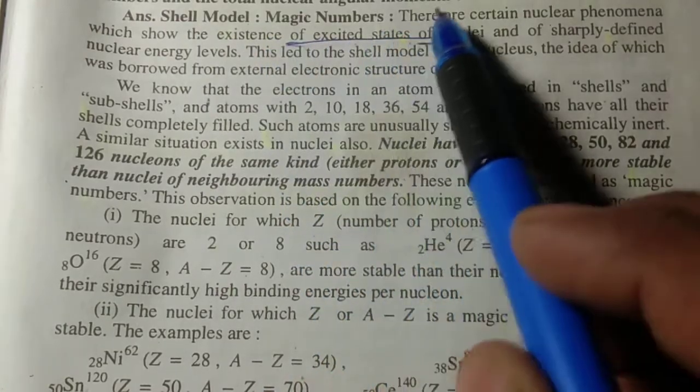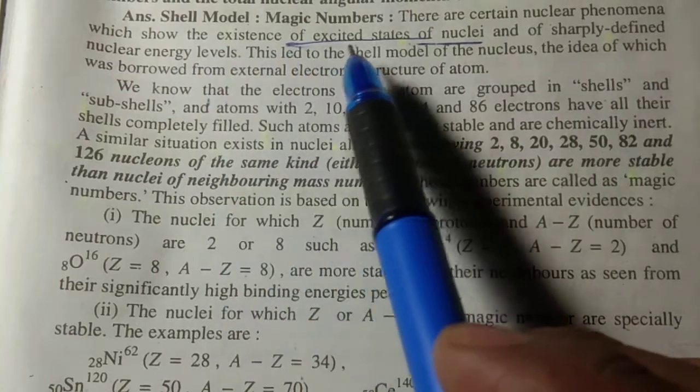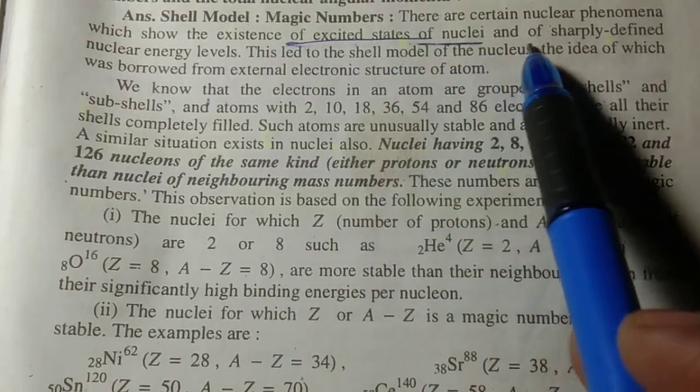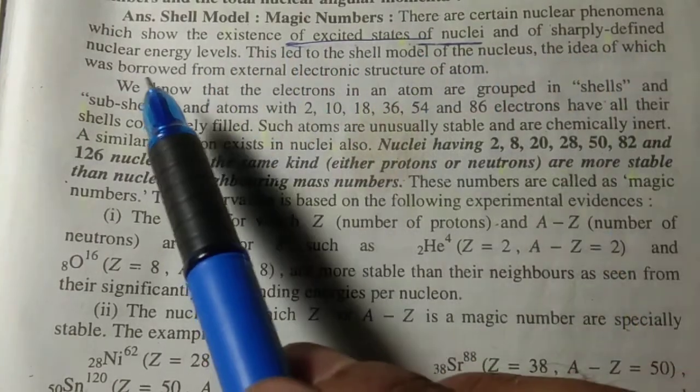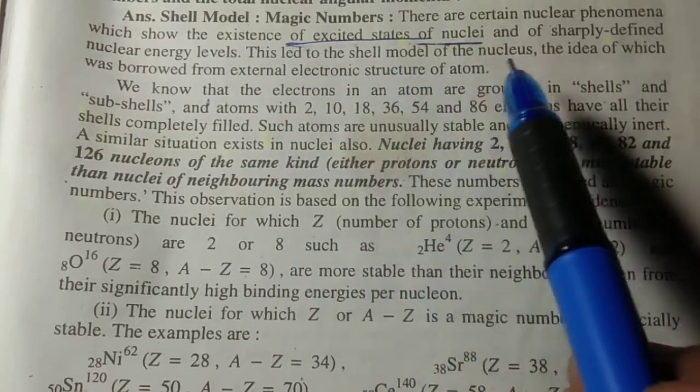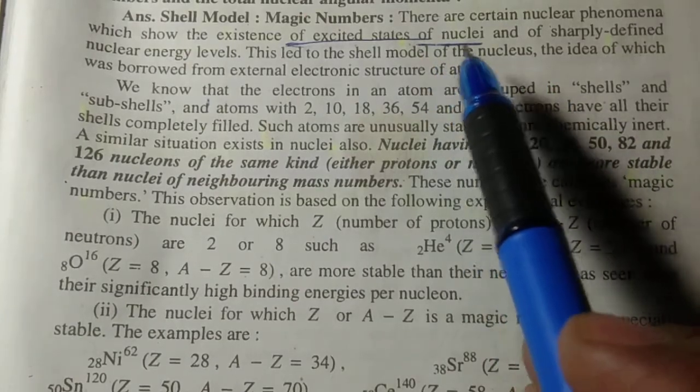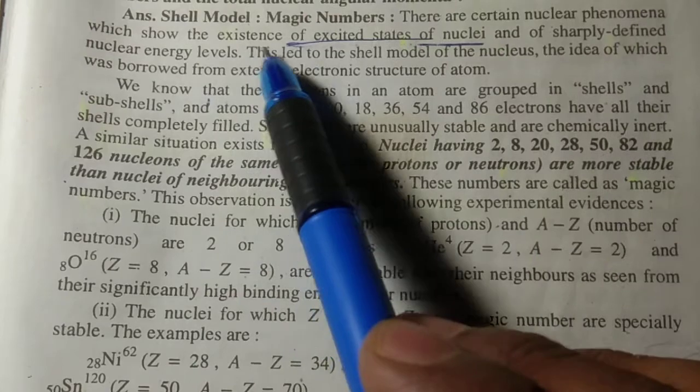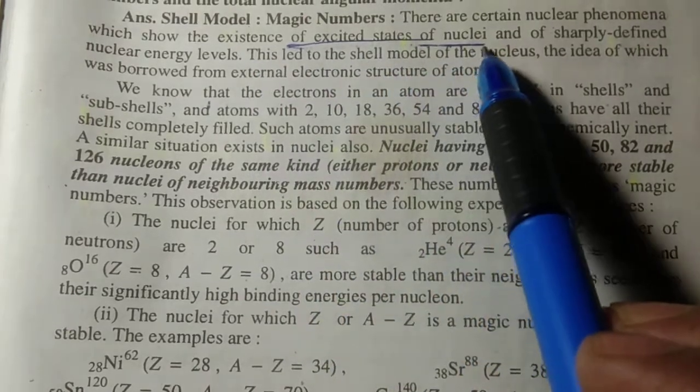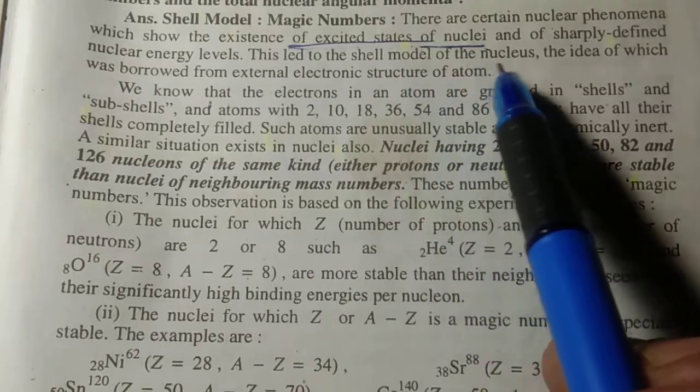There are certain nuclear phenomena which show the existence of excited states of nuclei and of sharply defined nuclear energy levels. This led to the shell model of the nucleus. The idea of which was borrowed from the external electronic structure of the atom.